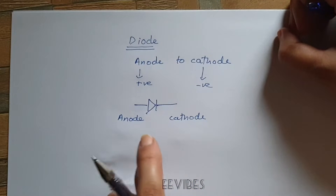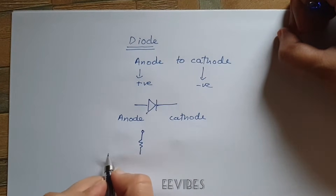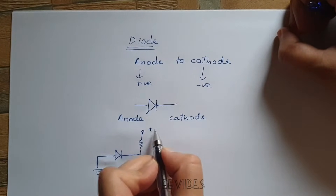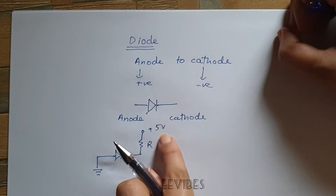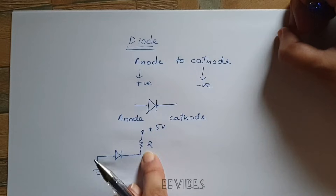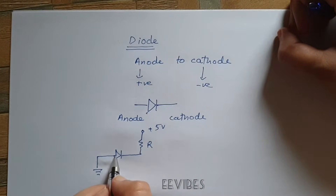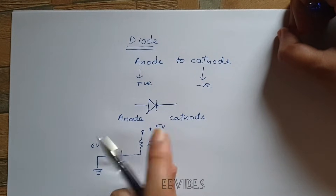Let's consider a simple case where we have connected a diode in a circuit. You can see the anode terminal is grounded while the cathode terminal is connected to a plus five volt supply through a resistor R. Now we have to decide whether it will conduct or not. Clearly, the anode terminal is connected to ground, meaning it is at zero volt potential, while the cathode is at approximately five volt potential via resistor R.